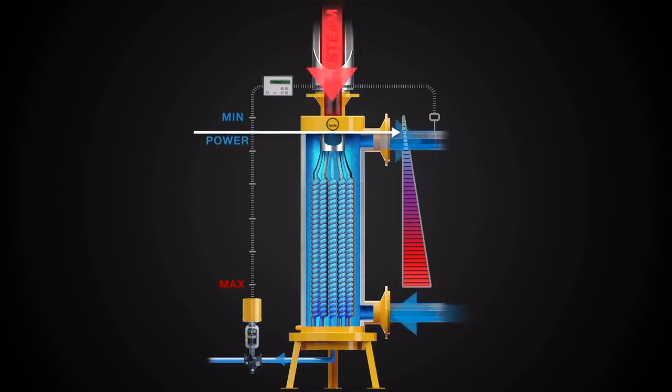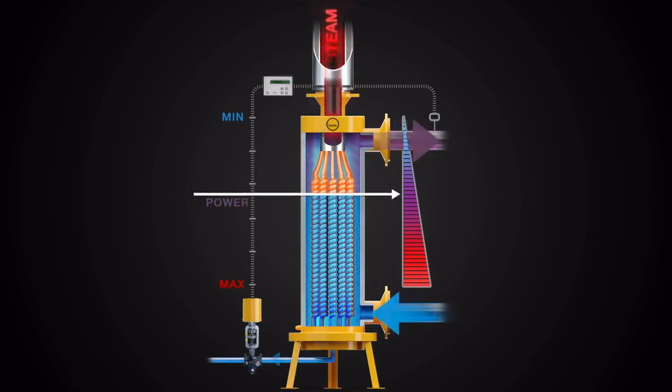The steam pushes the condensate down in the tube bundle and raises the temperature of the heating water through the walls of the tubes. The area of the active heating surface becomes larger, thus increasing the output of the heat exchanger.